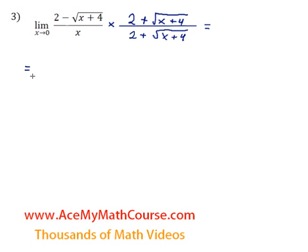So we have the limit as x approaches 0. And over here, we can actually expand this expression. We have 2 minus root x plus 4 times 2 plus root x plus 4. 2 times 2 is 4. 2 times the root of x plus 4 is just 2 times the square root of x plus 4. Next one over, we have minus root x plus 4 times 2. That's just minus 2 root x plus 4.